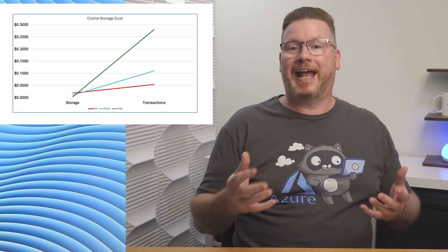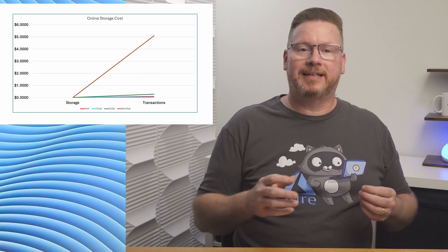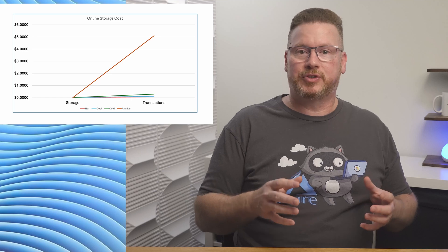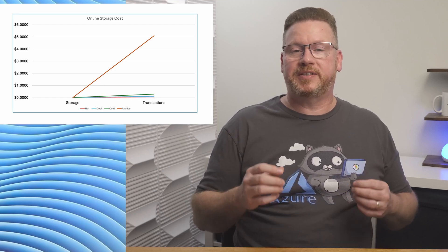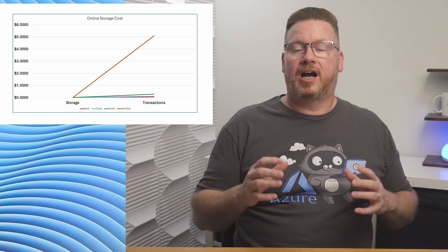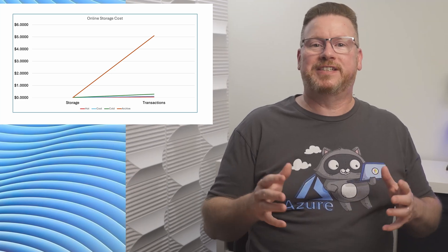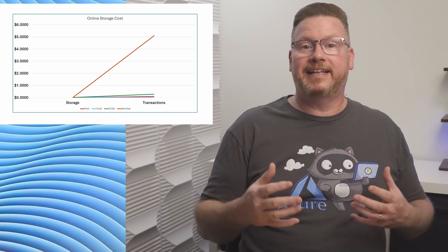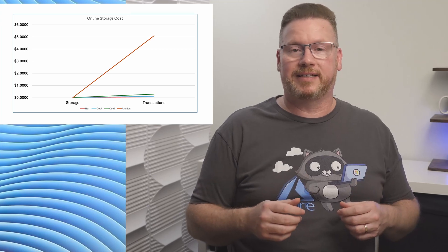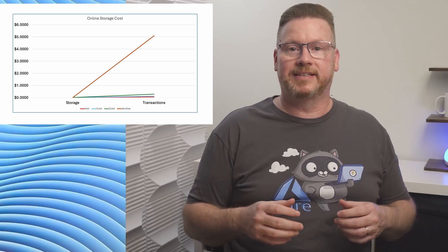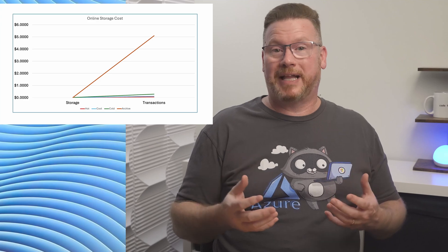Let's see what happens when we add the archive tier. It doesn't display well, but on the left for storage, it's the cheapest option of them all. Transactions — specifically reads — are significantly higher. Use the archive tier for just that: archiving data that's unlikely to be accessed but has to be stored for at least 180 days, such as long-term data retention like backups or compliance information.